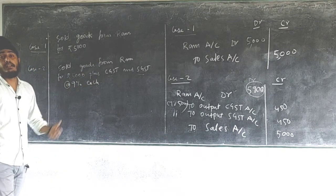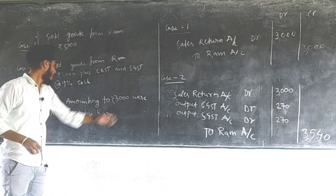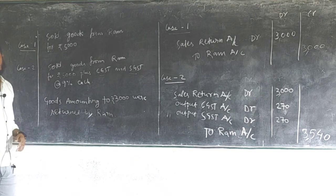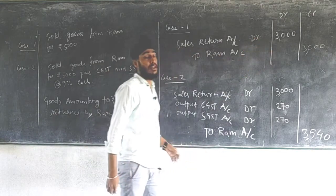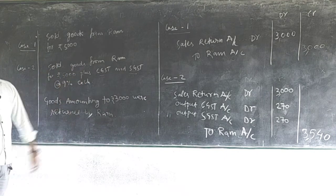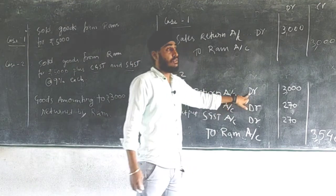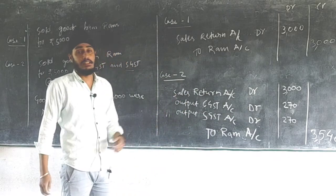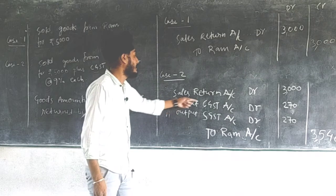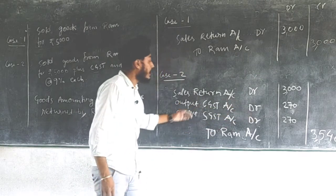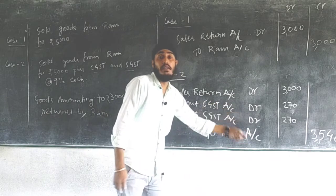Now let us see journal entries for purchase return and sales return. Suppose we had sold goods to Ram and goods amounting to rupees 3000 were returned by Ram. The normal entry for sales return is: Sales Return Account debit, to Ram Account — 3000 each side. But since we had sold on GST, during the sale we credited Output CGST and Output SGST. On sales return, those are reversed — Output CGST Account debit, Output SGST Account debit.